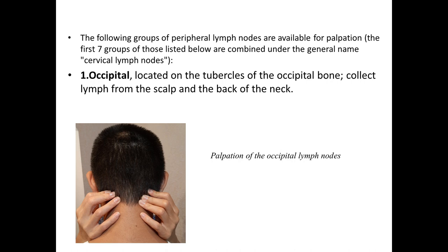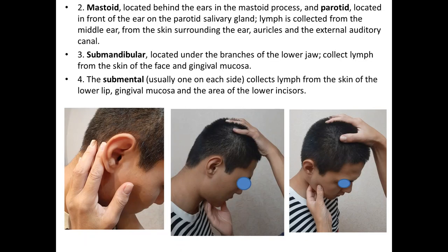The following groups of peripheral lymph nodes are available for palpation. Starting from occipital lymph nodes: located on the tubercles of the occipital bone, they collect lymph from the scalp and back of the neck. Here are examples of palpation of occipital lymph nodes — you should palpate with the pad of your fingers.